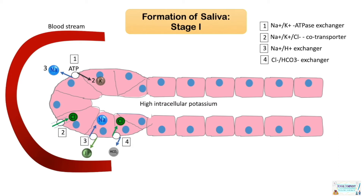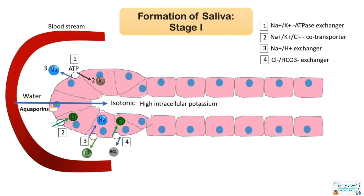During saliva secretion, there is rapid movement of water following stimulation, as acinar cells shrink dramatically after stimulated secretion. Most of the water moves by osmosis in response to sodium in the primary saliva. There is also evidence for paracellular or transcellular movement of water, and aquaporins are believed to be involved. Aquaporins 1 and 5 are the predominant aquaporins in human salivary glands, localized primarily in serous acini on the apical membranes of acinar cells, including the intercalated canaliculi.